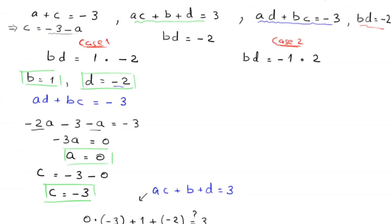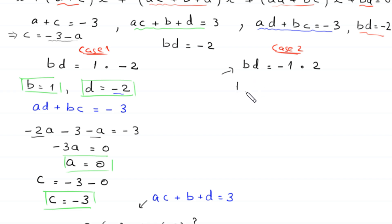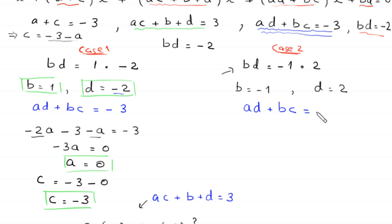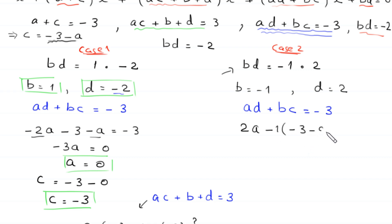For Case 2, b = -1 and d = 2. Using the equation ad + bc = -3 with c = -3 - a: a(2) + (-1)(-3 - a) = -3, which gives 2a + 3 + a = -3, so 3a + 3 = -3.